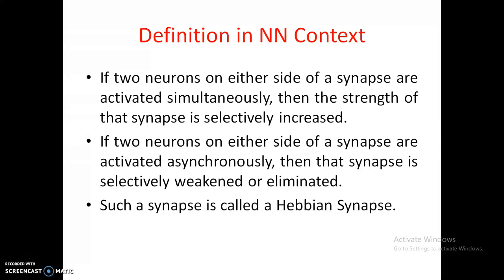If two neurons on either side of the synapse are activated asynchronously, then that synapse is selectively weakened or eliminated. For example, if friend A keeps saying 'hi' to friend B but friend B never responds, after some days friend A gets bored and will neglect the relation — the relation is weakened or eliminated. Based on Hebb's postulate, we have divided into two rules in the neural network context, and such a synapse is called a Hebbian synapse.